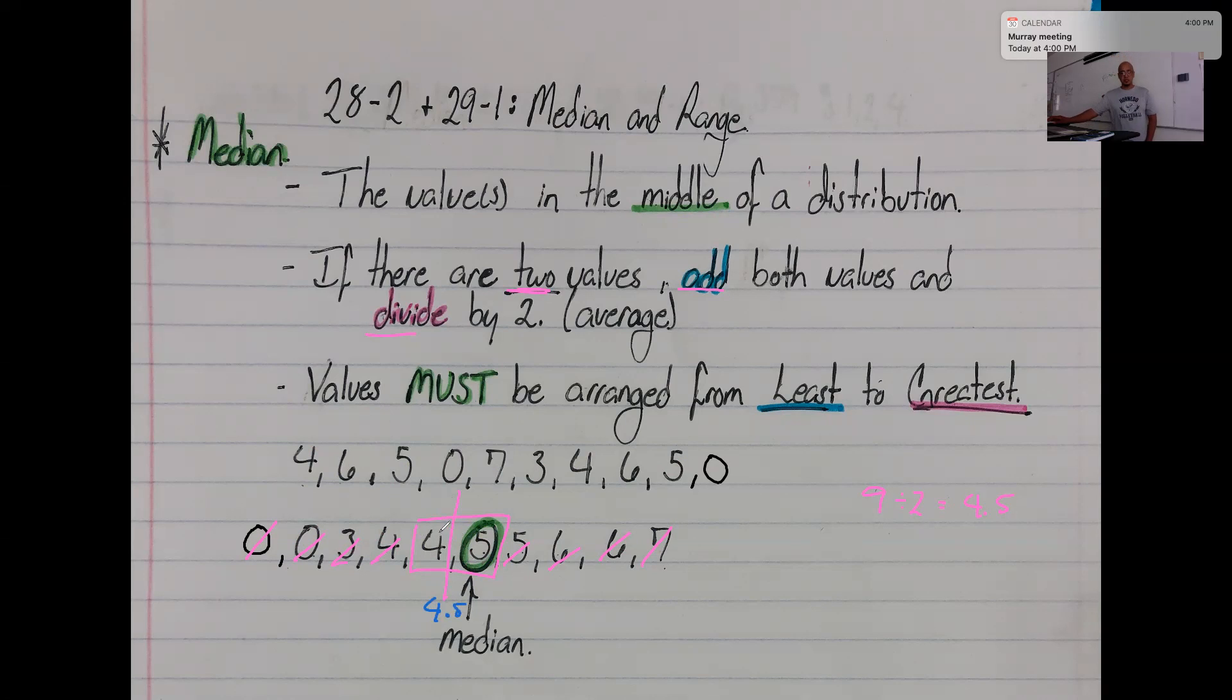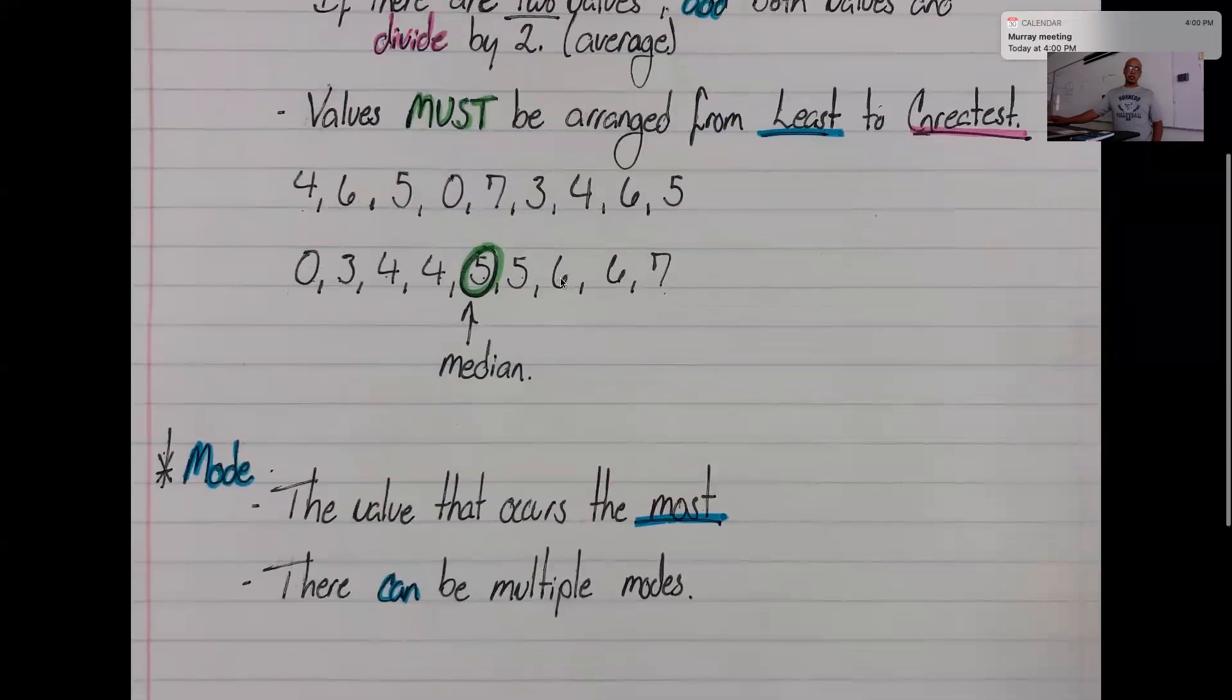The median in this case will be 4.5. If we have an odd number of values, it's just the 1 in the middle, the 1 that doesn't have a pair. But if we have an even number of values, you're going to have 2 values in the middle. You're going to take those 2 values, add them together, and then divide by 2. That is to say we're getting the average. That is how you find the median.